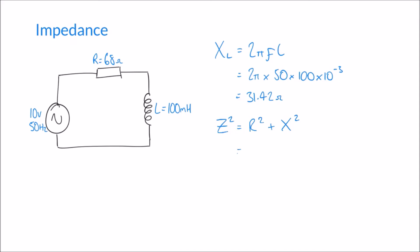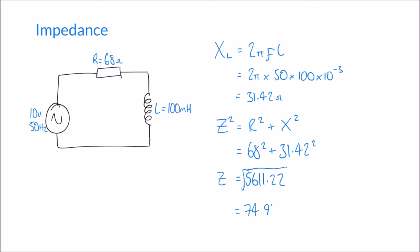Let's apply this to our circuit. We know R is 68, so: Z² = 68² + 31.42² = 5611.22. But that's Z squared — we want just Z. So we take the square root: Z = √5611.22, which gives a final answer of 74.91 ohms.